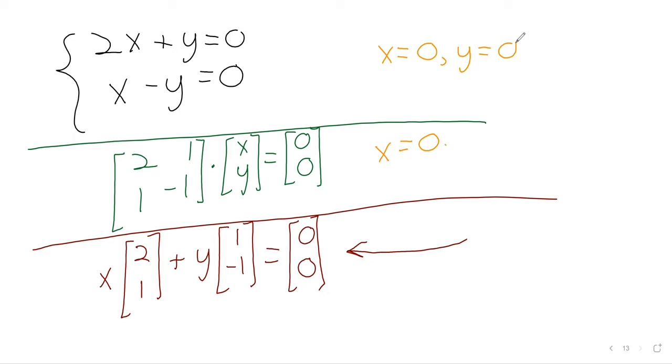Just like the system always has the trivial solution, a homogeneous matrix equation always has the trivial solution. And for that last case, we can ask exactly the same question we just asked about systems of linear equations, which is, well, it has the trivial solution, does it have non-trivial solutions? Does it have other solutions?